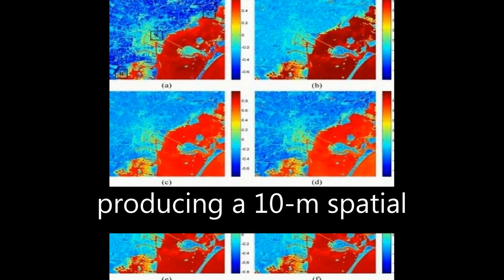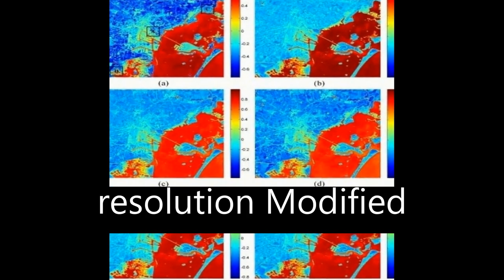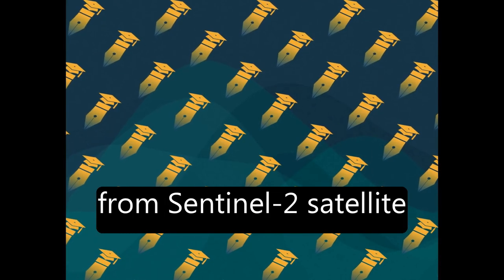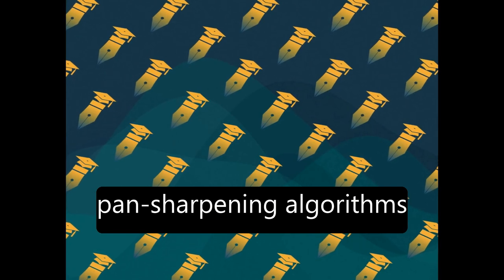The paper presents a novel method for producing a 10-meter spatial resolution Modified Normalized Difference Water Index (MNDWI) from Sentinel-2 satellite images using pan-sharpening algorithms.